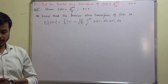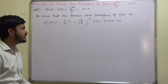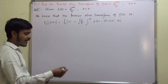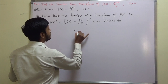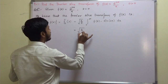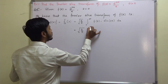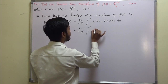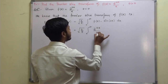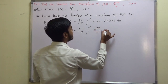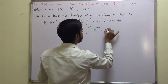This is the definition of the Fourier sine transform. Now we have f(x), so we substitute that value: sqrt(2/pi) times the integration from 0 to infinity of e^(-ax)/x times sin(sx) dx.